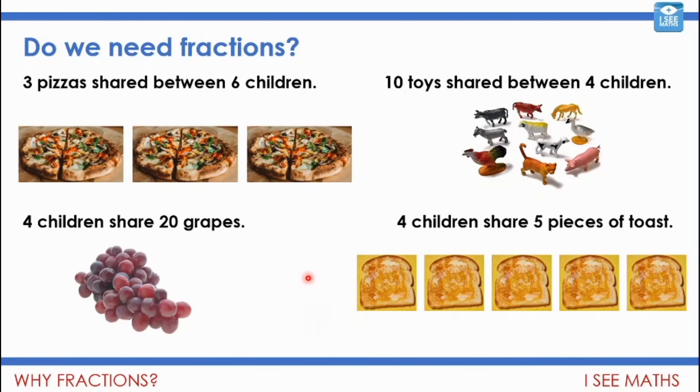So let's have a look at those examples. Three pizzas shared between six children. Again, maybe here you thought, well, we could split each pizza into six pieces, into sixths. So what would happen is maybe each person gets a sixth from here, and a sixth from here, and a sixth from here. So they get three pieces that are a sixth of a pizza.